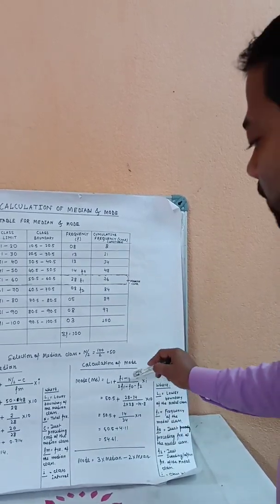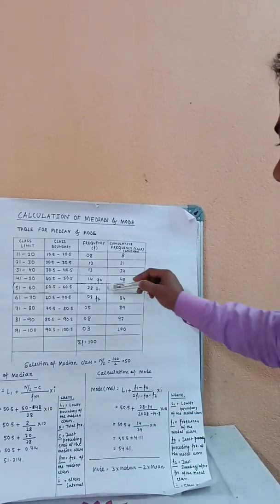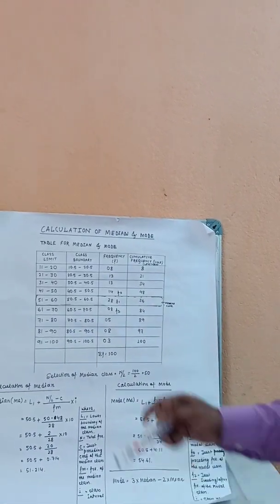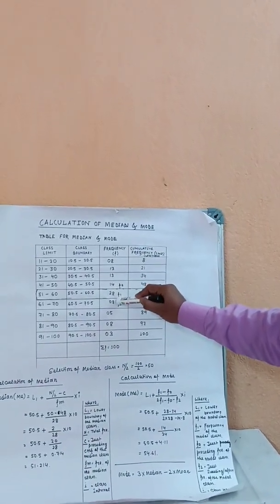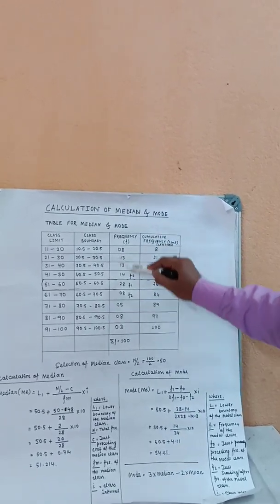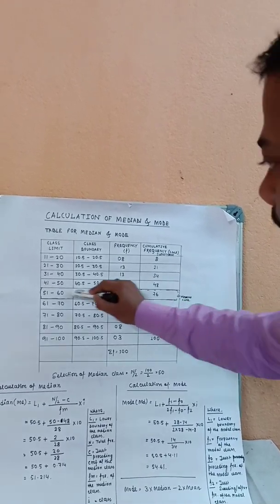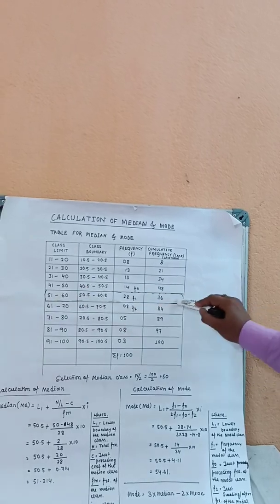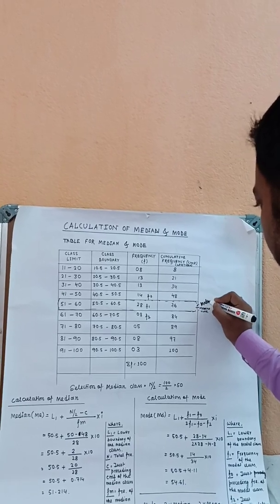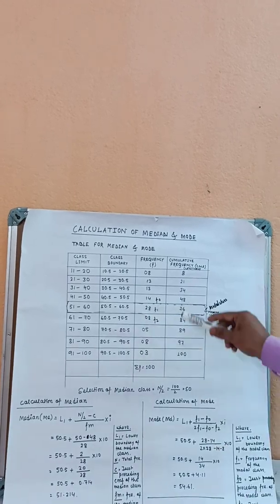F1, F0, and F2 are the key values. F1 is the frequency of the modal class — the class with the highest frequency. The modal class has the highest frequency, which is 28. So F1 equals 28.